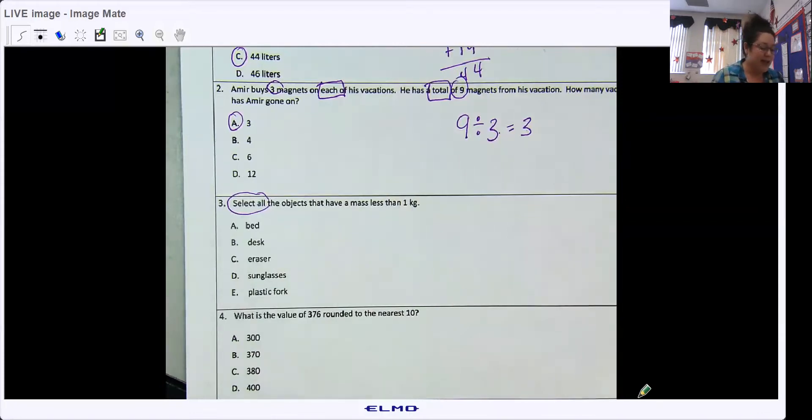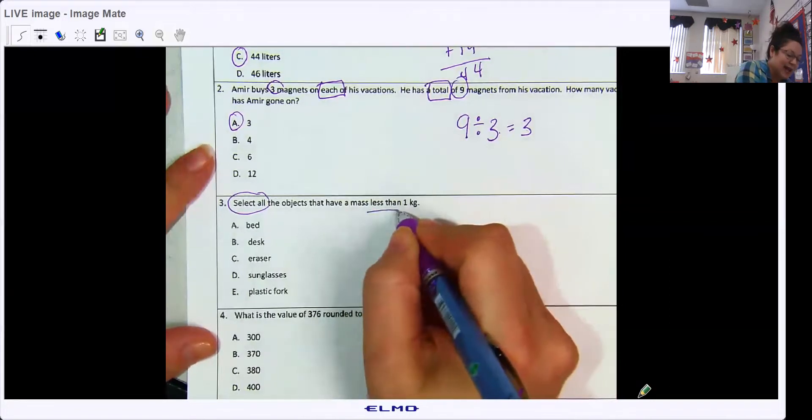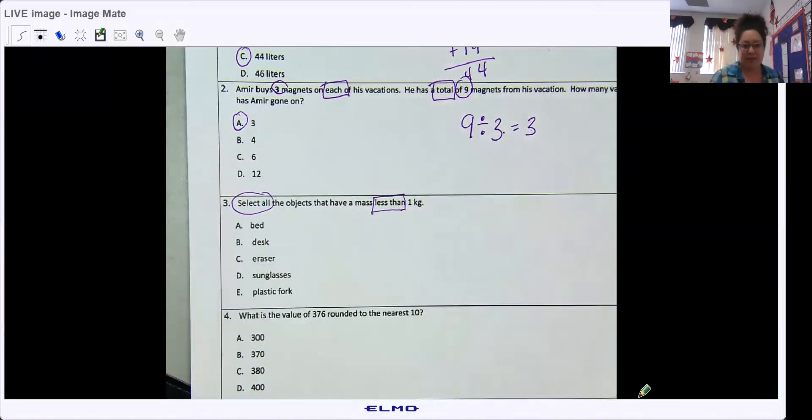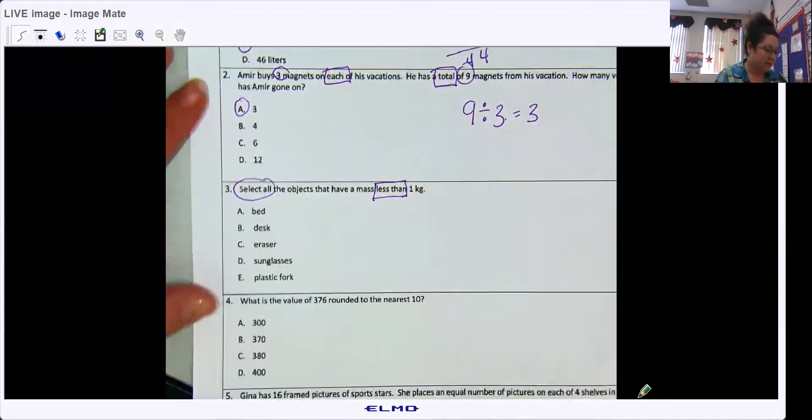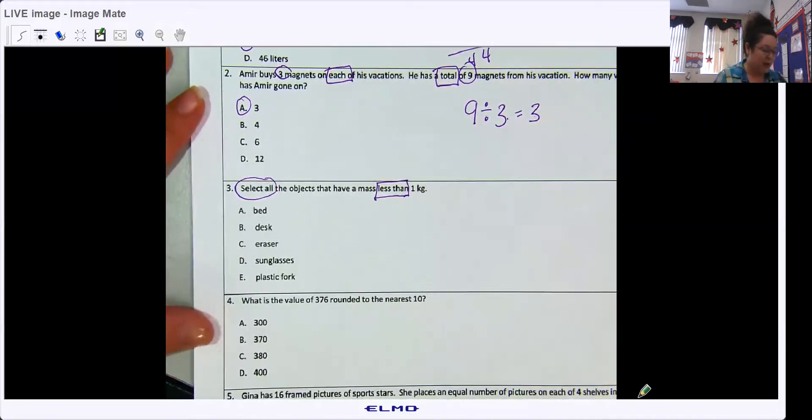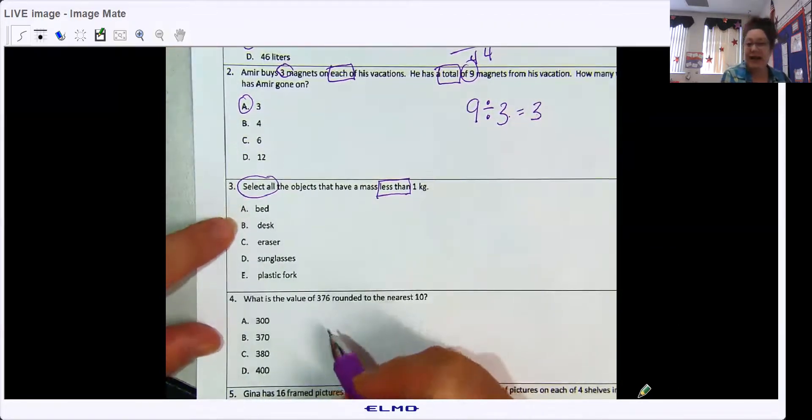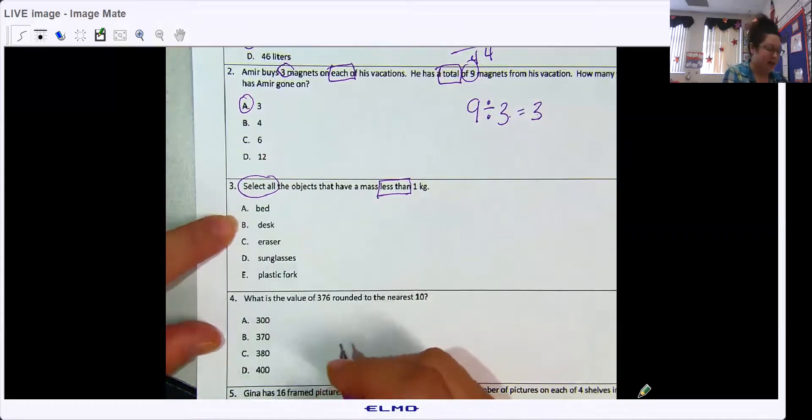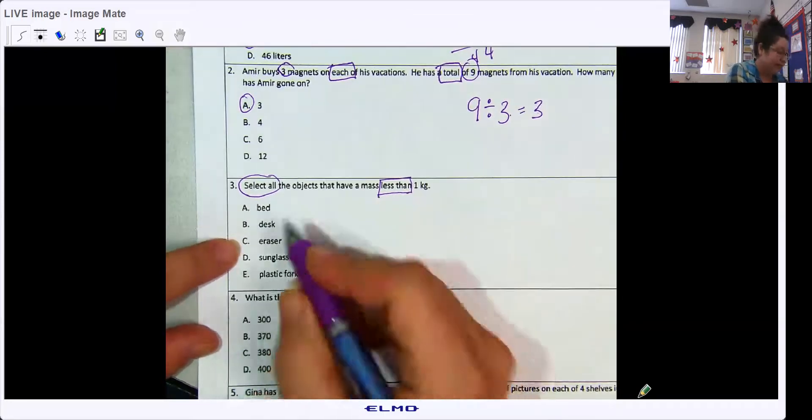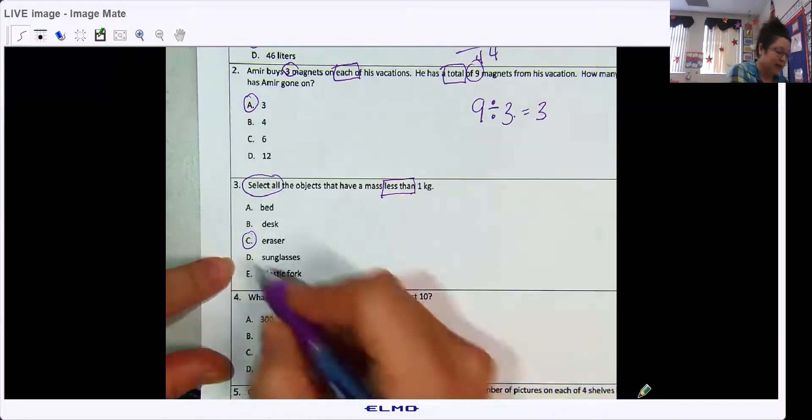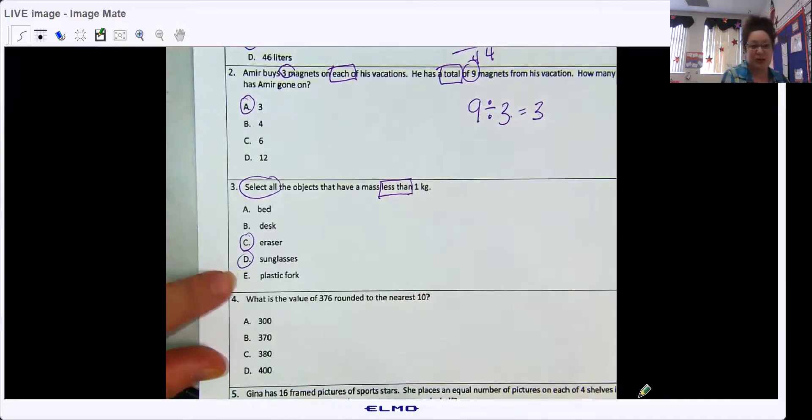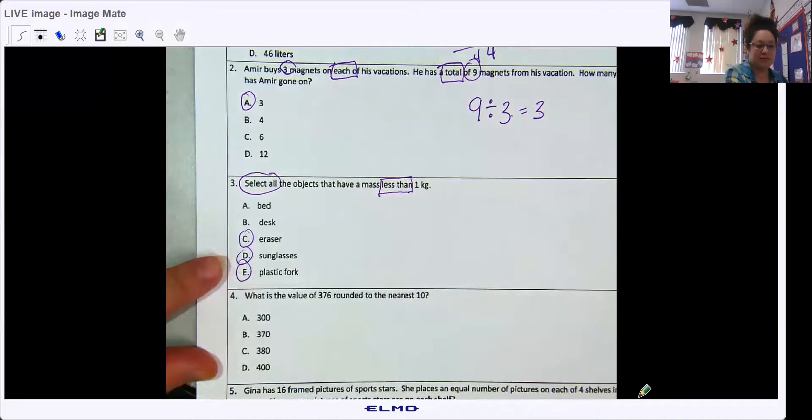Select all the objects that have a mass less than one kilogram. And we know a kilogram is not too much weight, kind of around a pound. A bed is heavy, so that's not it. A desk is pretty heavy, so that's not it. Eraser, that's light. Sunglasses, they're pretty light. Plastic fork, light.